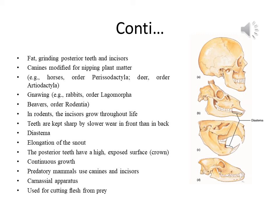The teeth are kept sharp by slower wear in front than in back. The gap called the diastema separates the anterior food-procuring teeth from the posterior grinding teeth. The diastema results from an elongation of the snout that allows the anterior teeth to reach closer to the ground or into narrow openings to procure food. The posterior teeth have a high exposed surface known as crown and continuous growth, which allows these teeth to withstand years of grinding tough vegetation.